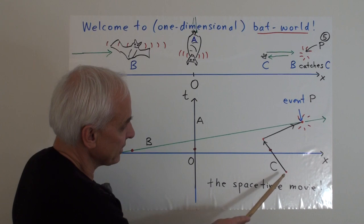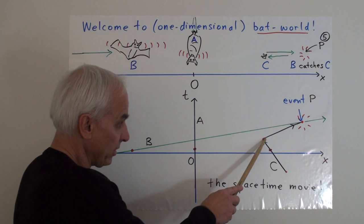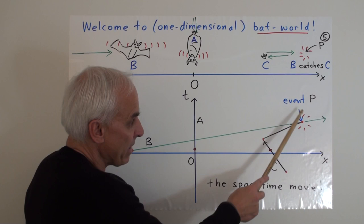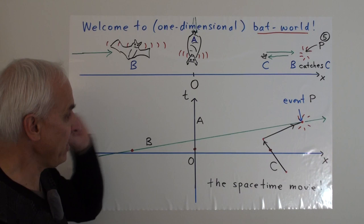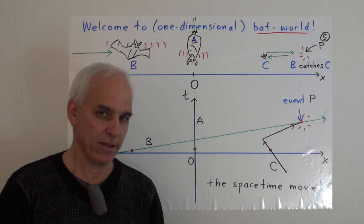And over here is a bug. This is the world line of bug C, which starts over here and is moving, first of all, to the left, represented by this line here. And at this point here, the bug realizes that it's in trouble and better go the other way. And so here, the world line changes and then it heads off in this direction. But it's not as fast as our friend B, and so B catches it right there. And so this dot represents what we might call an event, because they call it P. That's the event where bat B catches bug C. And we're going to try to understand what's going on in our one-dimensional bat world in terms of a space-time diagram like this.